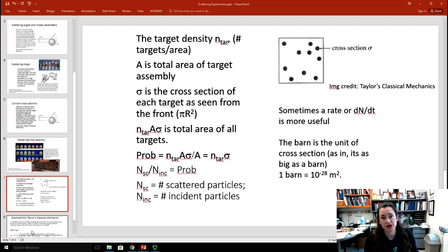When I say a cross-sectional area, imagine that you take a picture or a snapshot of your targets. So, that's a two-dimensional projection of your targets. And you're just looking at how much area they take up in your snapshot. We'll call A the total area of our target assembly. In this case, it's this little rectangle. It would be the length times the width of that little rectangle that's pictured. And we'll call sigma the cross-section of each target as seen from the front. In this case, my targets are all spheres. So, the cross-section of each target as seen from the front would be pi r squared, where r is the radius of those little spheres.